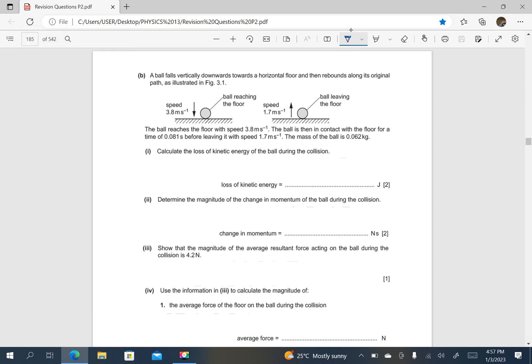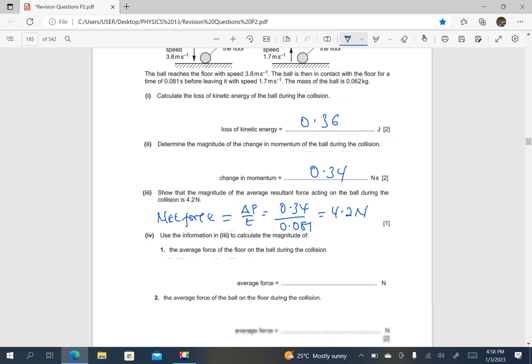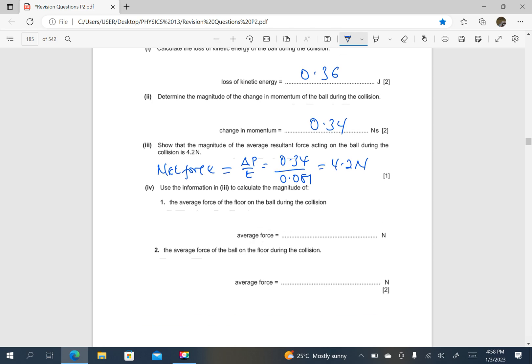So this one is fine. The net force, I think we had found this to be 0.36, that is there was loss in kinetic energy. We found this as 0.34 and we know that the net force is given by the rate of change of momentum, that is change in momentum over time. And this was 0.34 divided by the time was 0.081, which gave us the net force as 4.2 newtons.